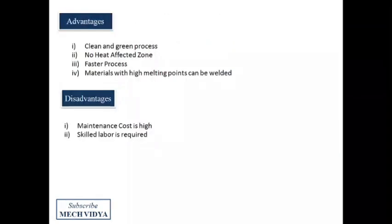Talking about the advantages, this is a very clean process with no smoke or spatter. Since the fusion takes place over a very narrow zone, the heat affected zone is also very negligible. We can also weld materials like tungsten and nickel which have a very high melting point. And finally, this is a very fast process. However, this process is very expensive as the maintenance of the vacuum chamber is very complicated and thus skilled labor is required to operate it.